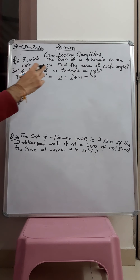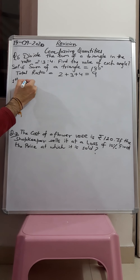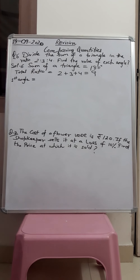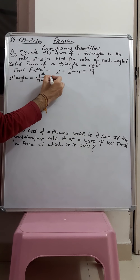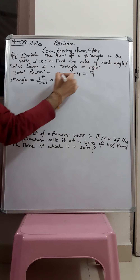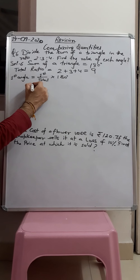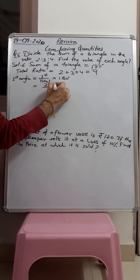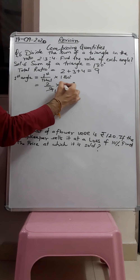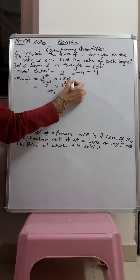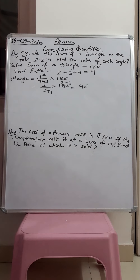Now find each angle. The formula is: each angle equals its ratio divided by total ratio multiplied by 180 degrees. First angle: 2 upon 9 multiplied by 180. Cancelling — 9 goes into 180 twenty times — so 2 multiplied by 20 gives 40 degrees. So the first angle is 40 degrees.